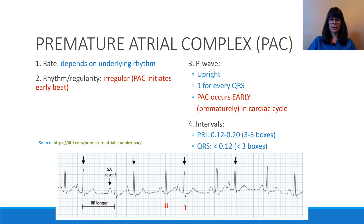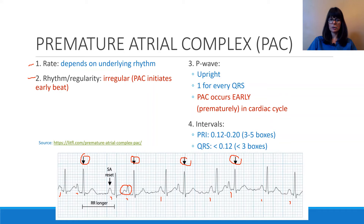The arrows on this rhythm strip signify the early beats, or the PACs. Every other beat on this rhythm strip has a premature atrial contraction, confirming the irregular rhythm. The P waves are upright throughout — upright, upright, upright. One of them is almost merged into the T wave from the previous complex. All P waves march out, with one for every QRS.